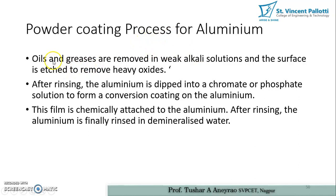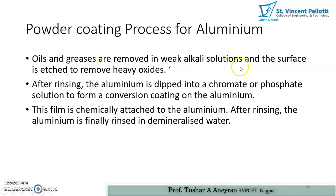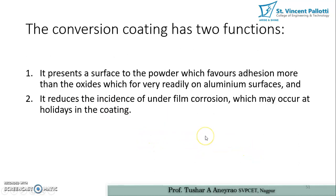For the aluminum powder coating process, oil and grease are removed in a weak alkali solution and the surface is etched to remove the heavy oxide. After rinsing, the aluminum is dipped into a chromate or phosphate solution to form a conversion coating, which is chemically attached to the aluminum. After rinsing, the aluminum is finally rinsed in demineralized water. The conversion coating has two functions: it presents a surface that favors adhesion more than the oxide that forms readily on aluminum, and it reduces the incidence of under-film corrosion at holidays in the coating.